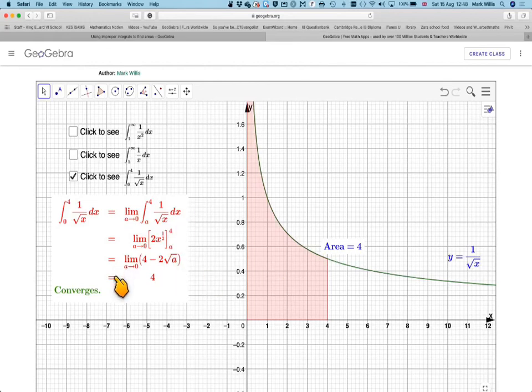Here's the working. We can see that it converges in this case, so we can actually evaluate the area. This has been a video to show you how to use improper integrals to find and evaluate an area. I hope you've understood, and I thank you for watching. I'll remind you that the link to the GeoGebra app will be in the notes of the video. Thank you very much.